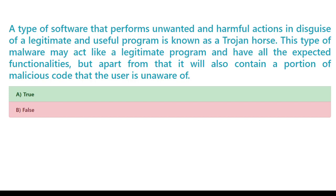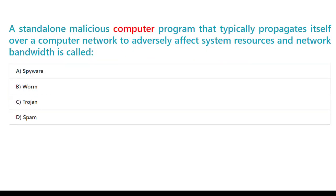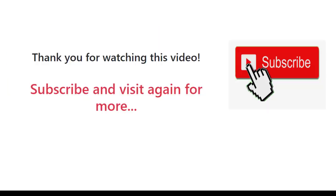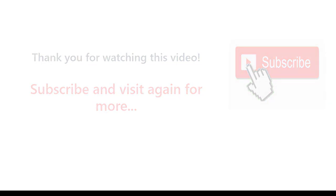A standalone malicious computer program that typically propagates itself over a computer network to adversely affect system resources and network bandwidth is called: A. Spyware. B. Worm. C. Trojan. D. Spam. The correct answer is B. Worm.